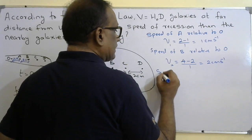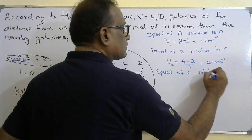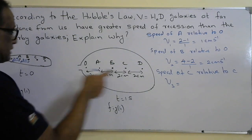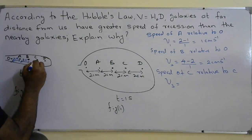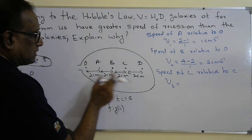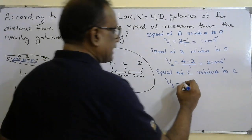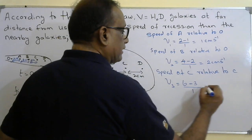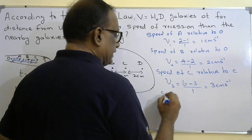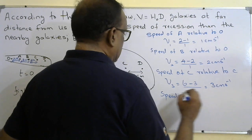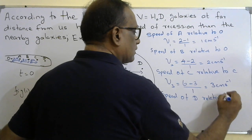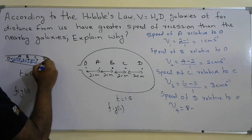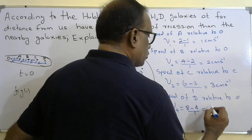The speed of C relative to O — V3 — is six minus three equals three, divided by one second, giving three centimeters per second. The speed of D relative to O — V4 — is eight minus four equals four, divided by one second, giving four centimeters per second. So V1 equals one, V2 equals two, V3 equals three, V4 equals four centimeters per second.